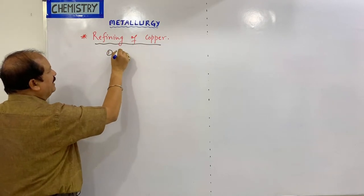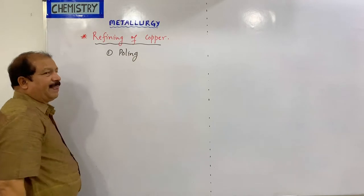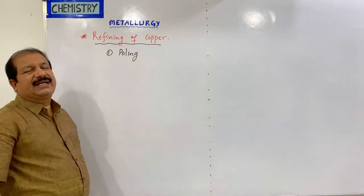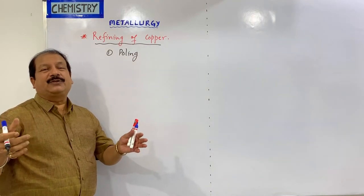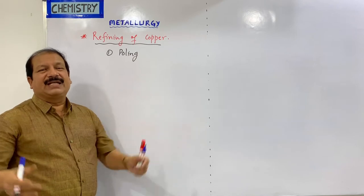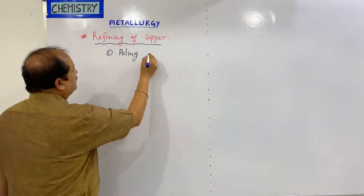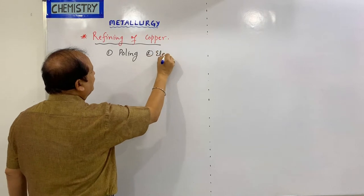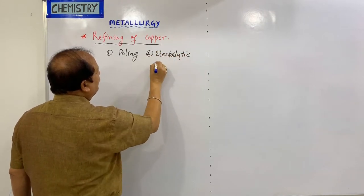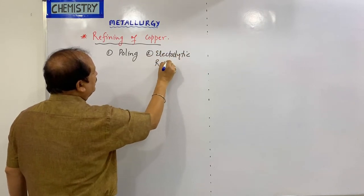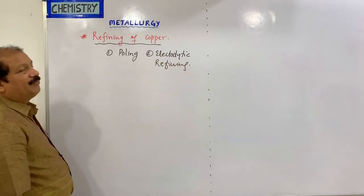First, we will look at poling. Poling uses green color poles. This is poling, and the second method is electrolytic refining.